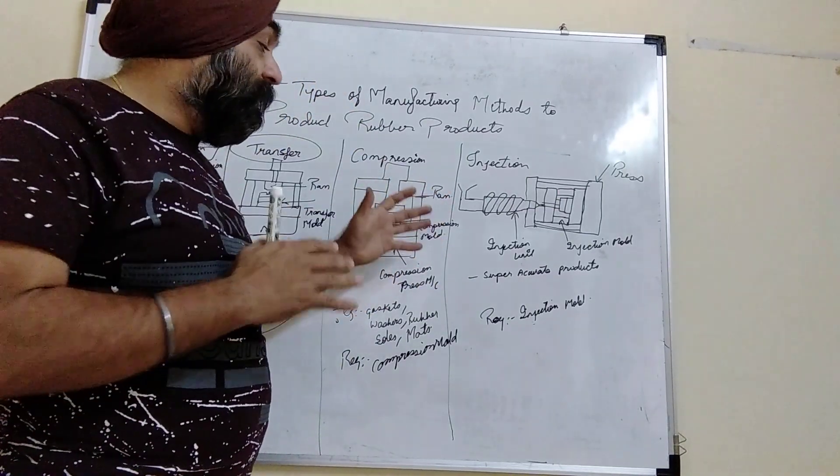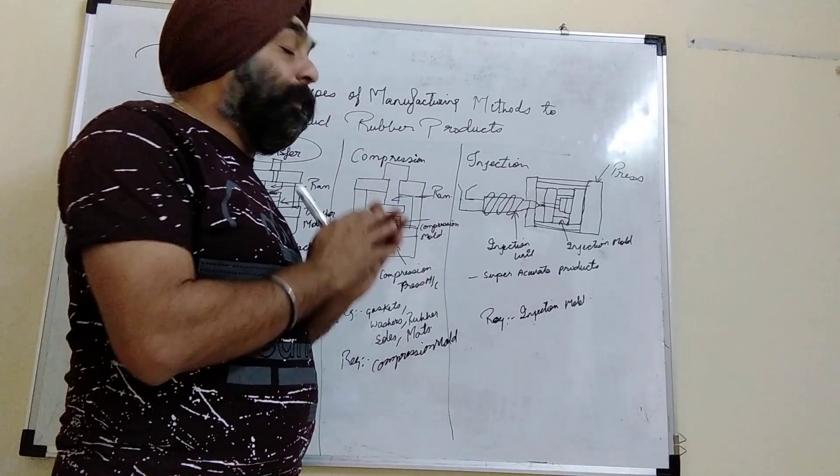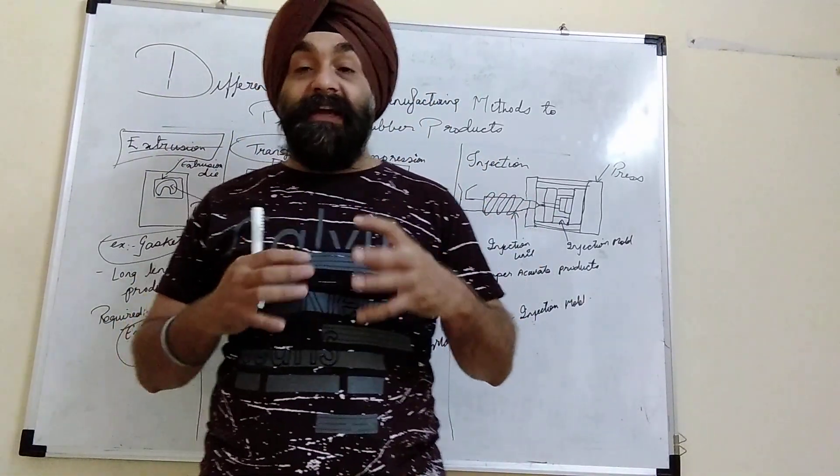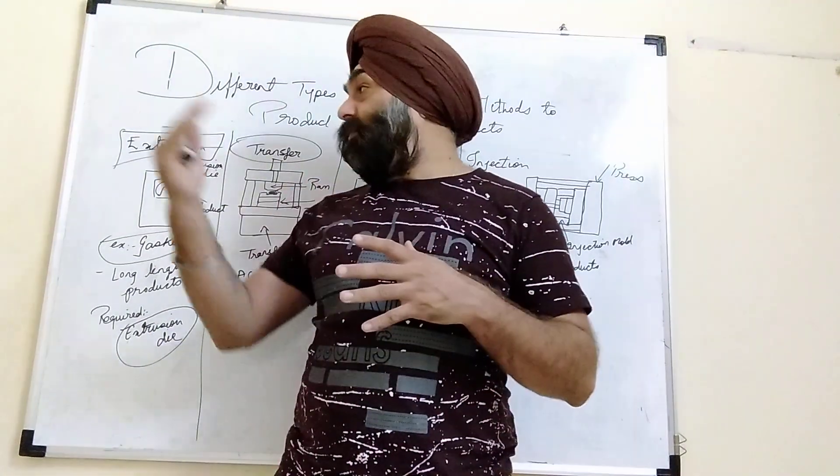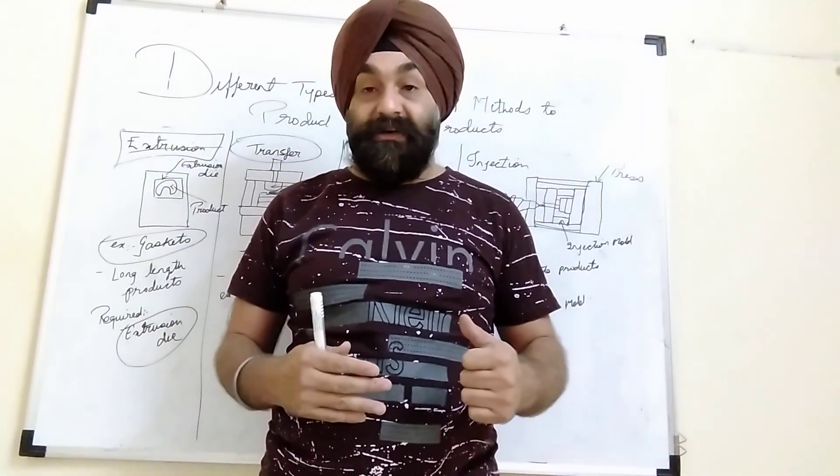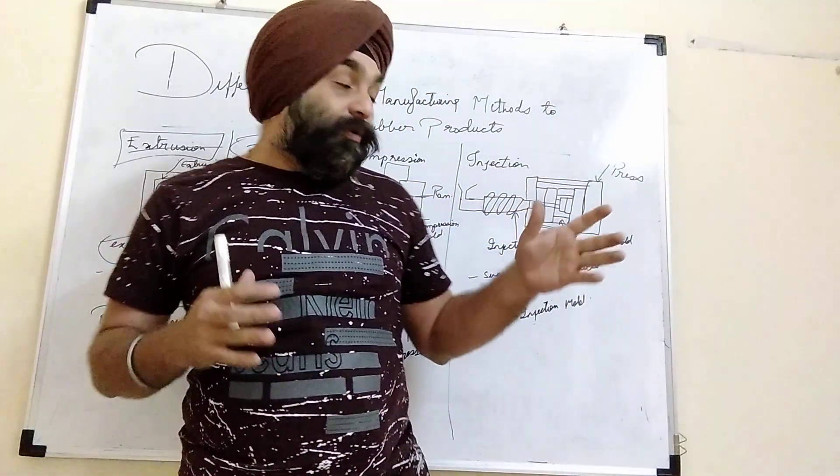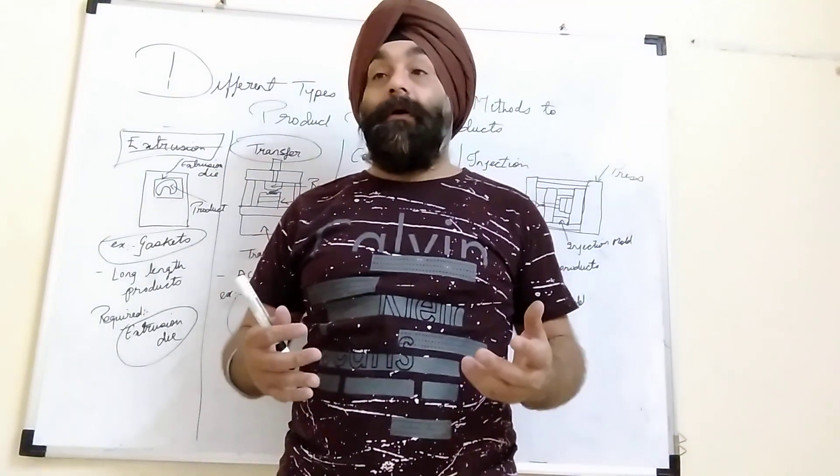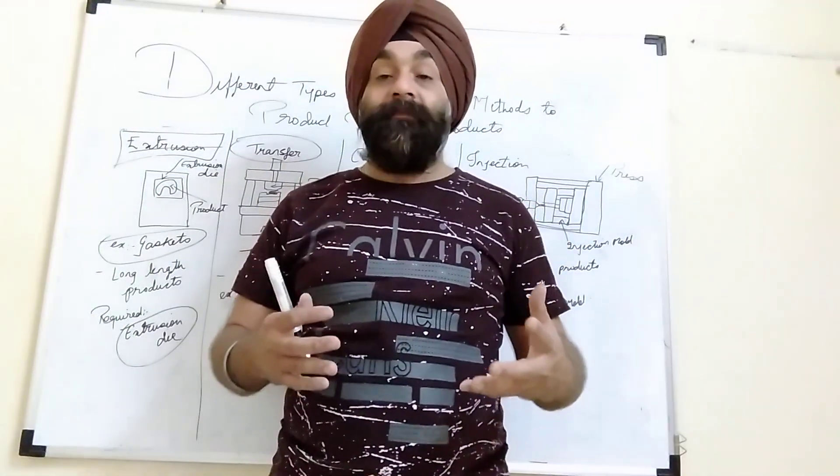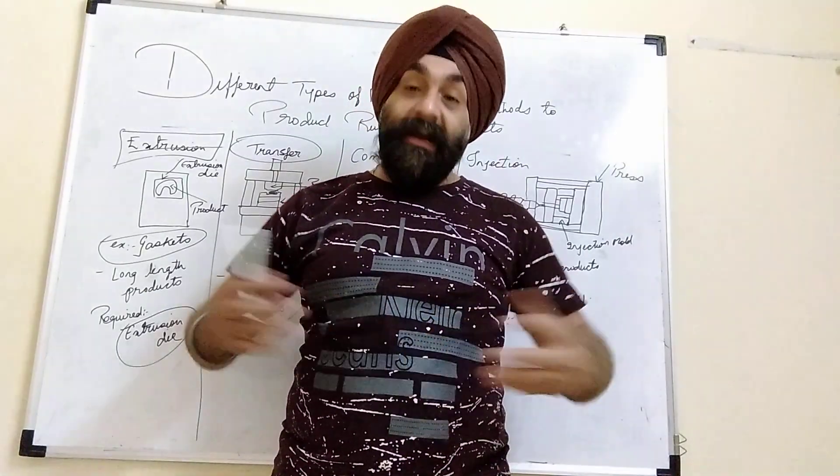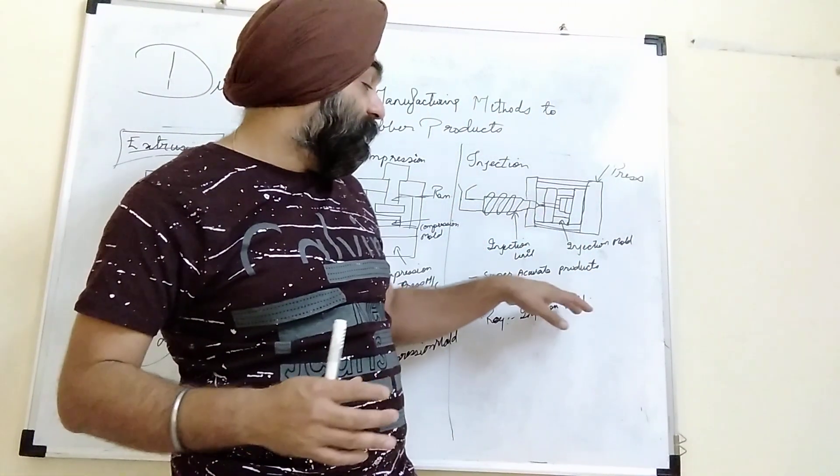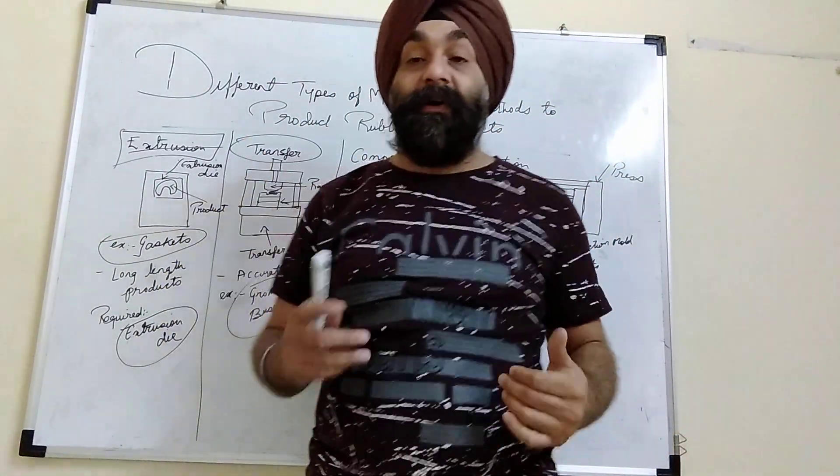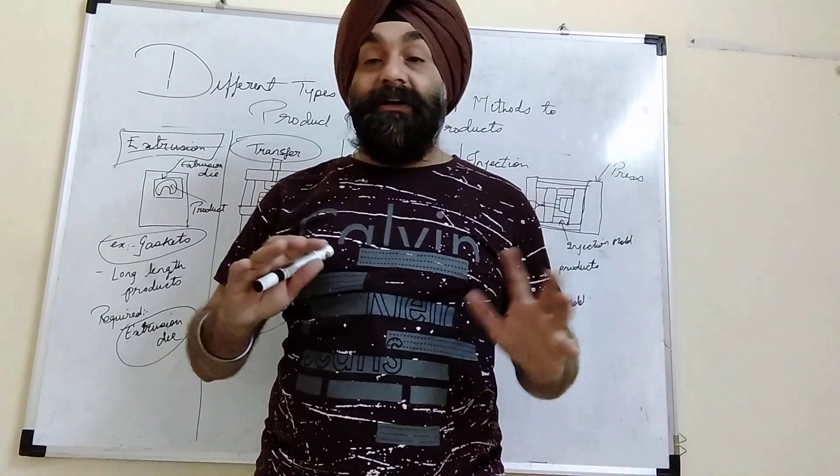So guys, these are the basic ways to produce rubber products. You can use any of these according to your application. You cannot go for injection mold for normal washer-type products because the costing will be increased in injection molding, whereas compression molds can be done in a much cheaper way. You have to think about all these methods before selecting.